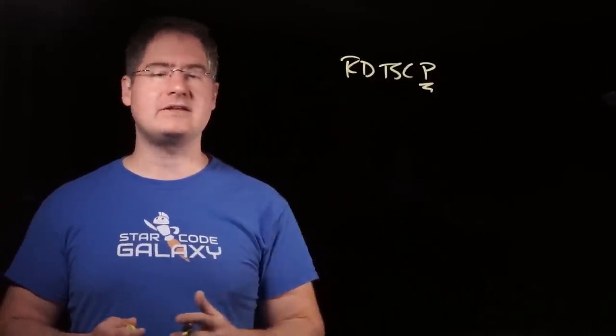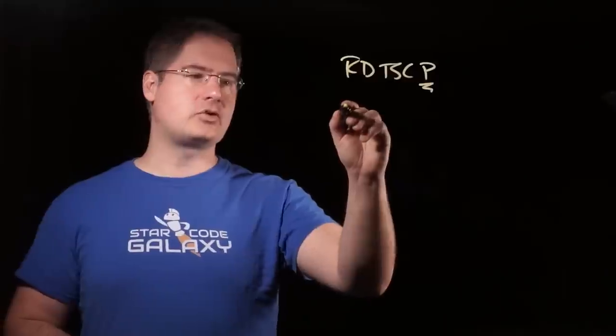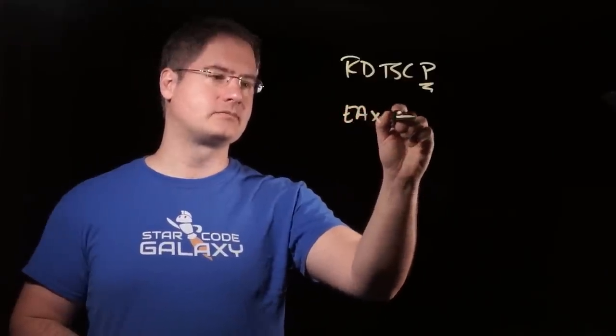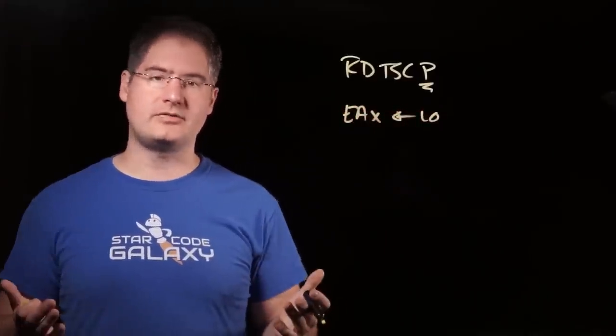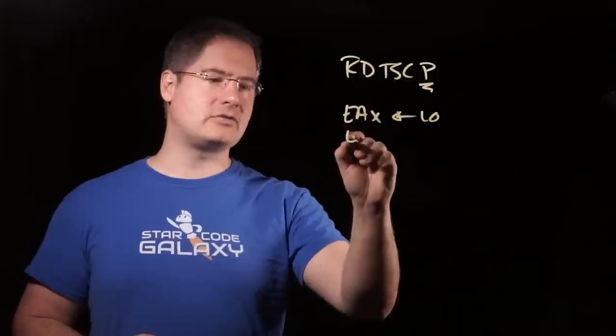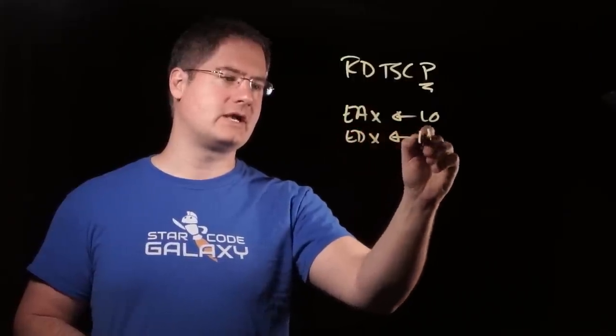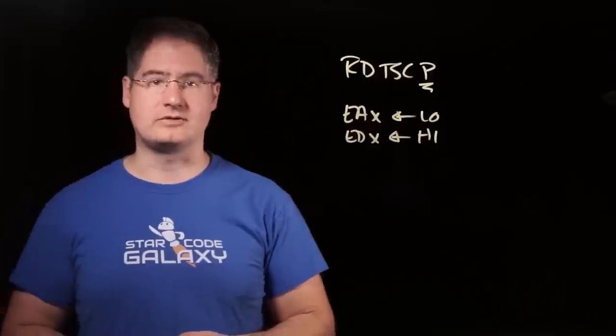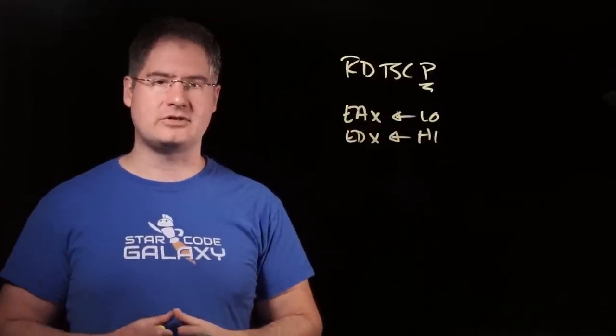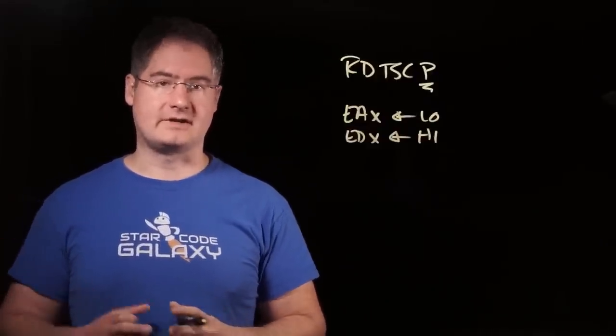First of all, exactly like RDTSC, it's going to put into EAX, the low part of the TSC, and then into EDX, it's going to put the high part of the timestamp counter. This is exactly the same as the RDTSC instruction that we looked at last time.